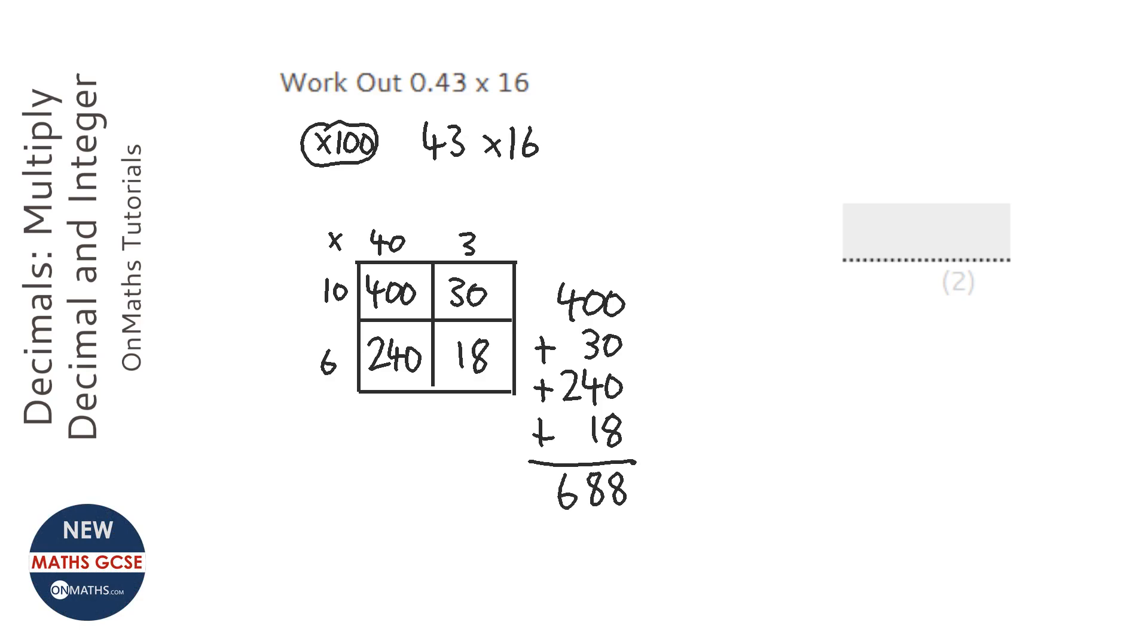When we've done that, we've got to remember that we timesed it by 100 originally. That means to undo that, we're going to have to divide the answer by 100.